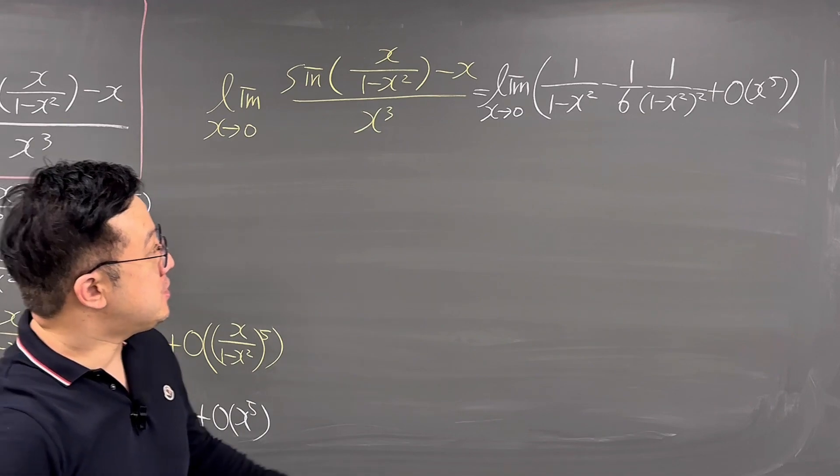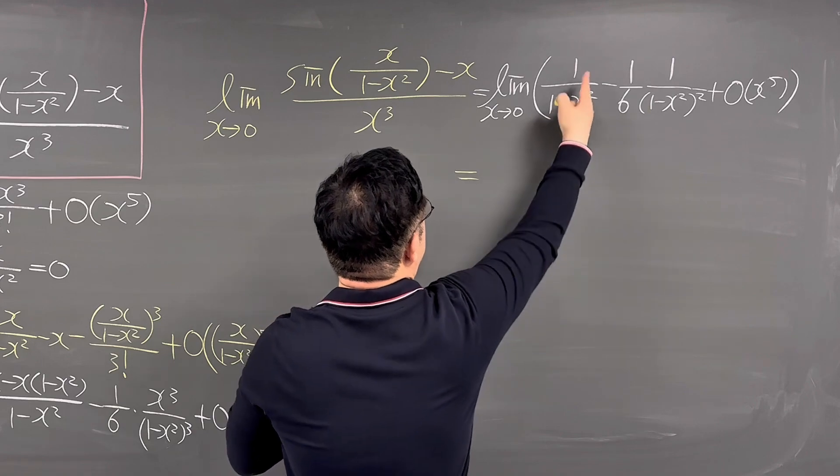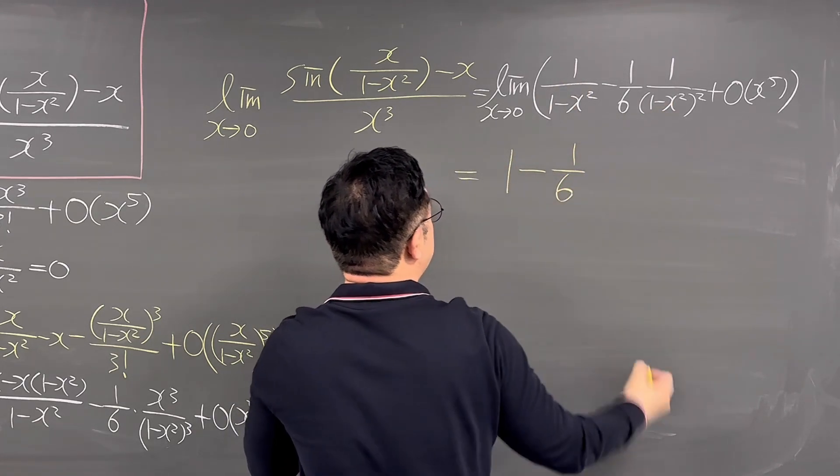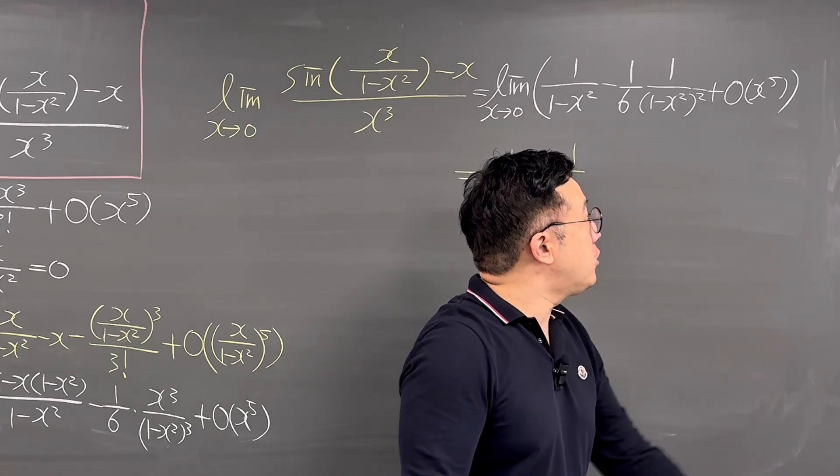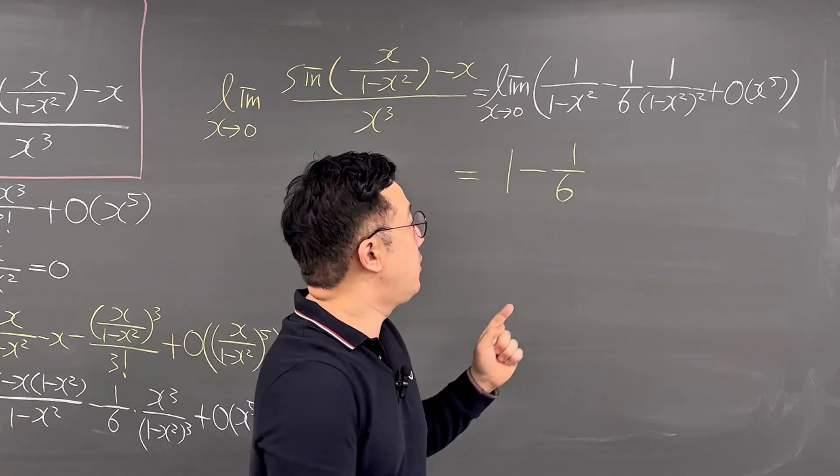So working on this, first of all, the limit of this term is equal to just 1, right? So this whole thing is equal to 1. And then that term, the second term is 1 over 6. About this big O of X to the power of 5, the limit when X is going to 0, that the big O is equal to 0, so plus 0.